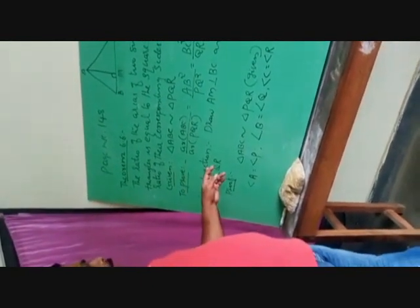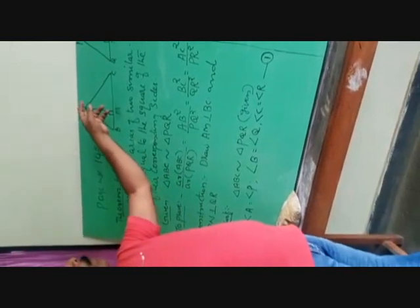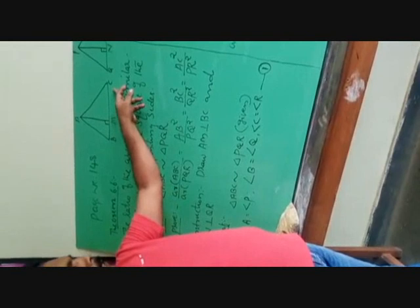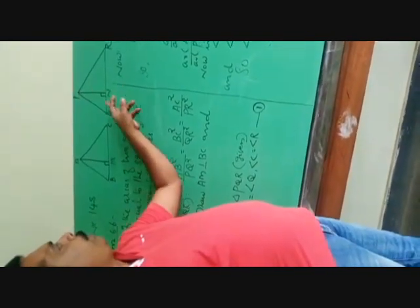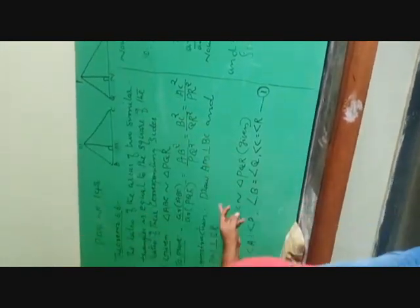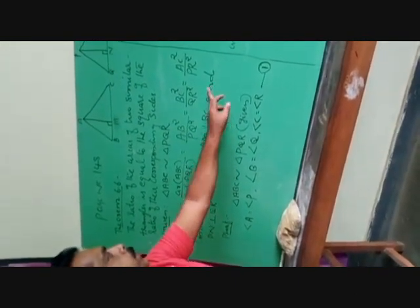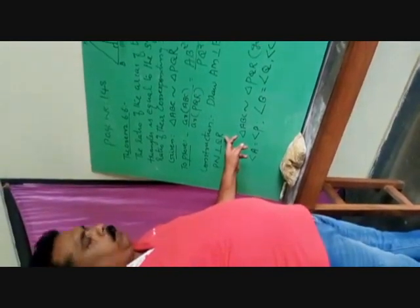Then, we have to prove this. For that, first we have to construct two perpendiculars. Already I have drawn here two perpendiculars: AM perpendicular to BC, and PN perpendicular to QR.